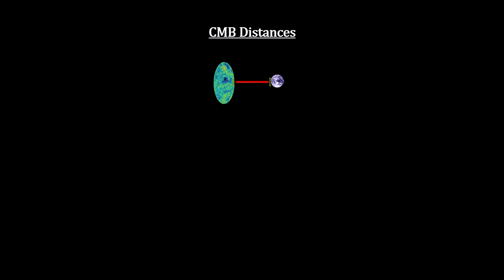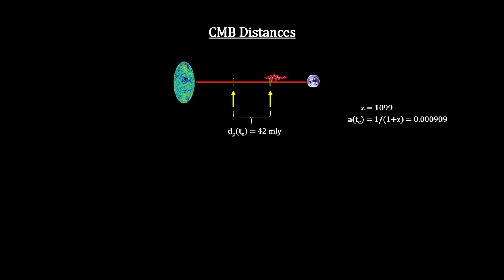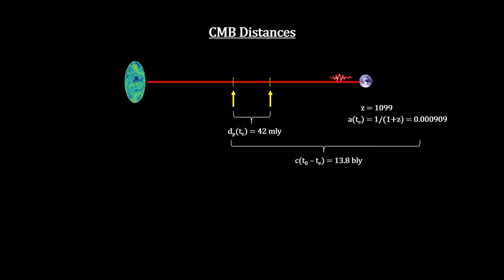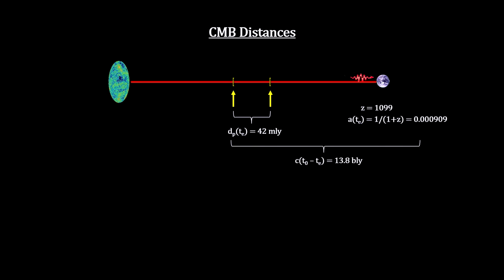For the CMB radiation, the redshift tells us that the light we see now was only 42 million light-years away from our location when it was emitted. It traveled for just under 13.8 billion years to reach us, and its starting location is now 46.5 billion light-years away, making the diameter of the visible universe 93 billion light-years.